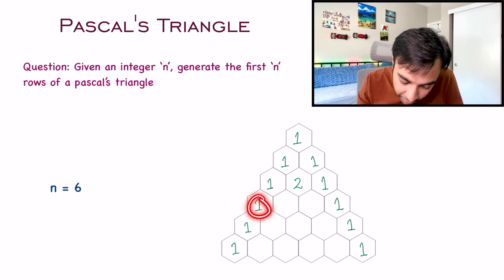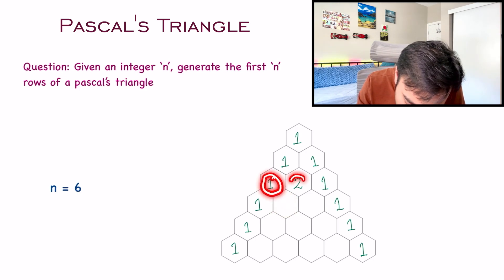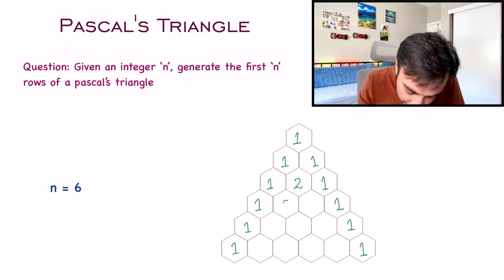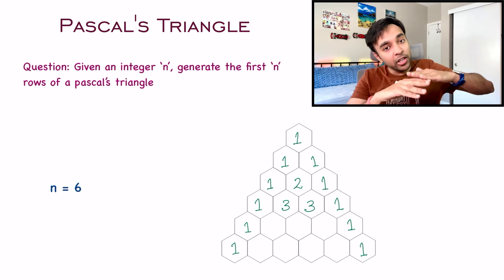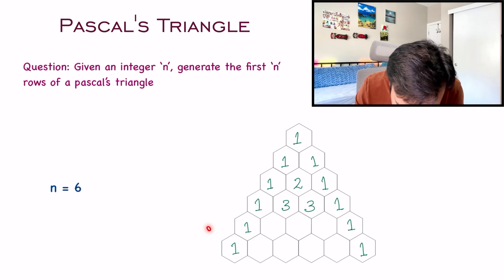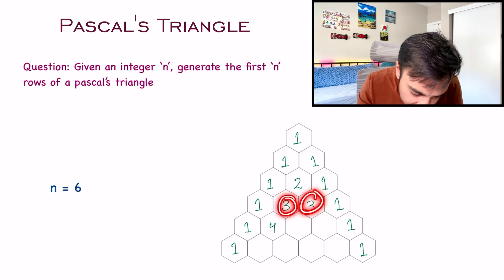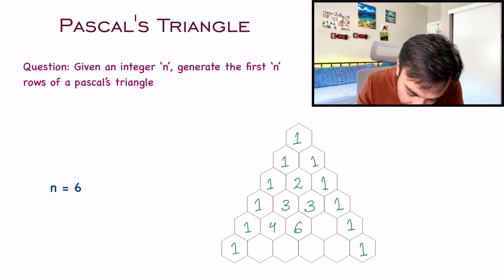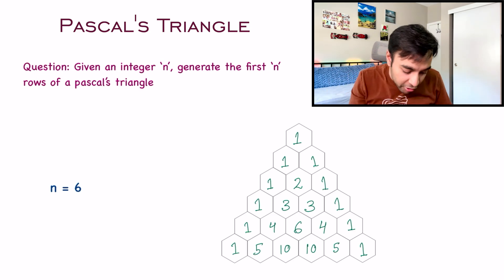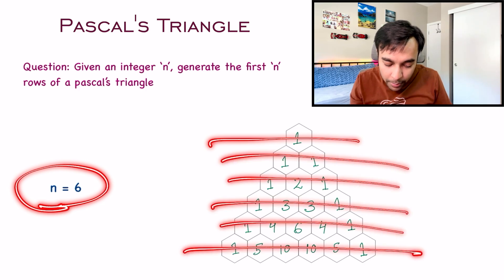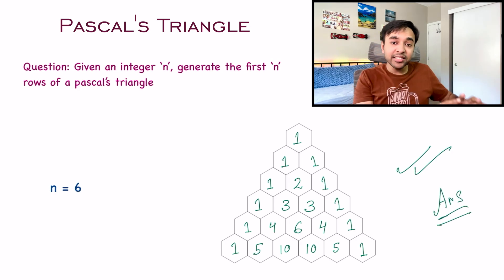Moving on to the fourth row, you add 1 at the beginning and end. For the remaining cells, the value is the sum of the two cells above it. So 1 plus 2 gives you 3, and 2 plus 1 gives you 3 again. This is how you fill each row in your Pascal's triangle. Adding 1 and 3 gives 4, adding 3 and 3 gives 6, adding 3 and 1 gives 4. So for n equals 6, you have created these 6 rows, and this entire list of rows is your answer.